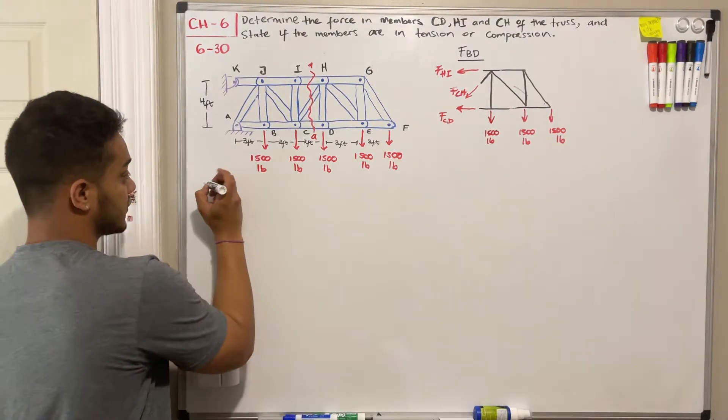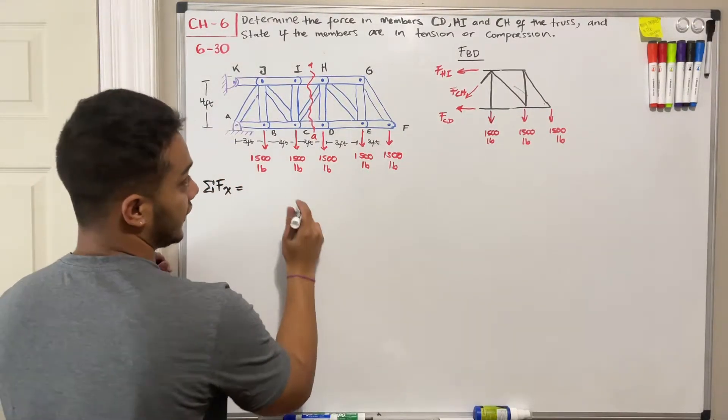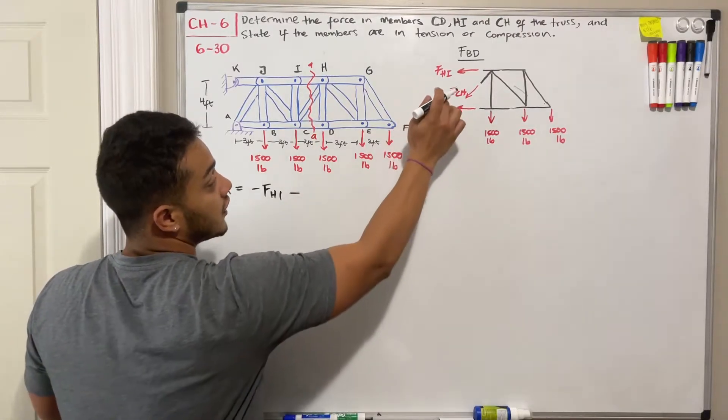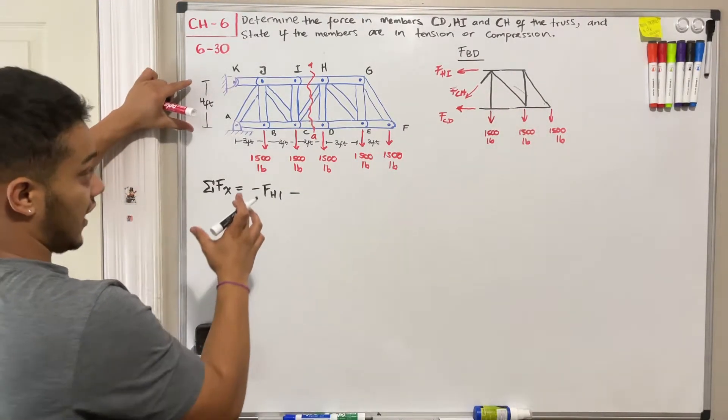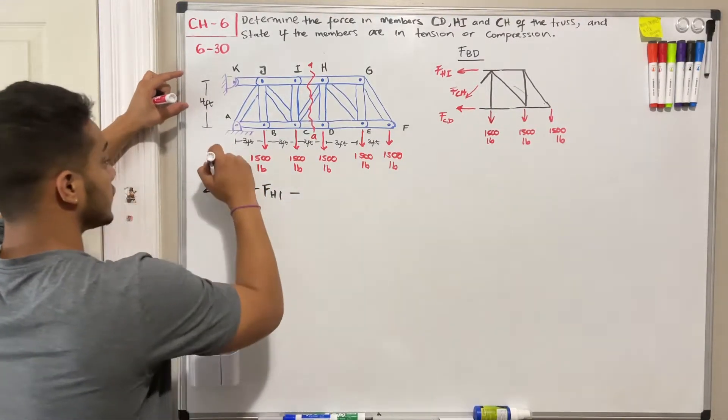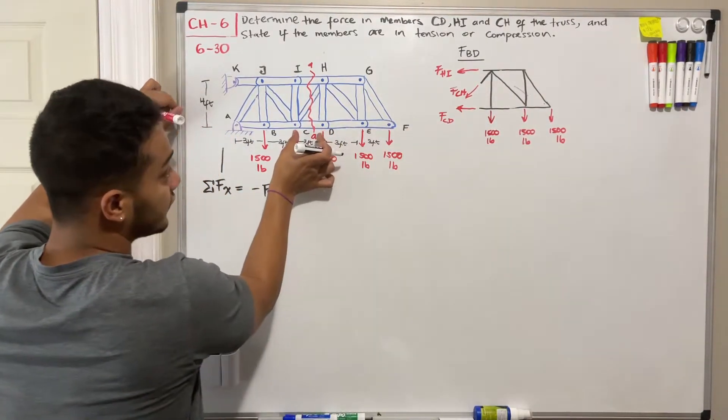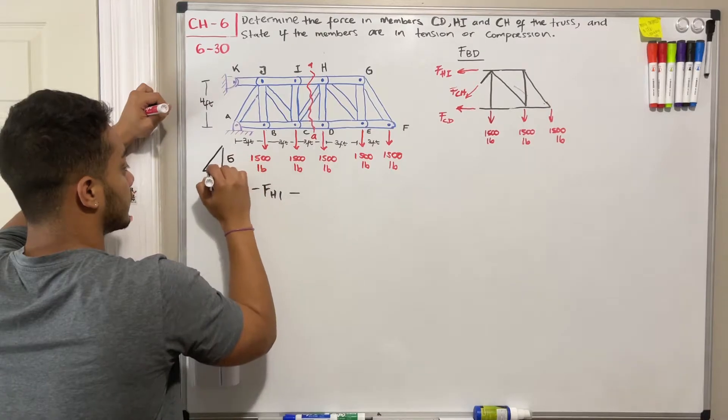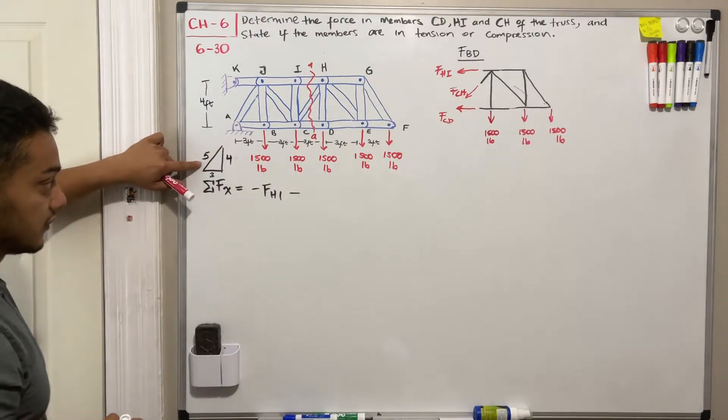All we're going to do now is our sum of forces in the X direction. What do we got in the X direction? We got negative FHI. So negative FHI minus the negative X component of CH. How much is that? Well, let's take a look. What will be its angle or its distance? So we'll take a look here. It's four going up. So we got a triangle that's four going up. Then we got this amount going to the left, which is three. So we got three. And then we complete our triangle. So this is four. Therefore, this will give us that the magnitude is five.